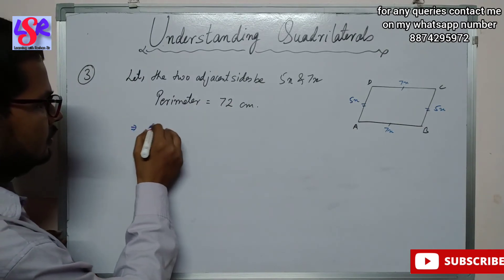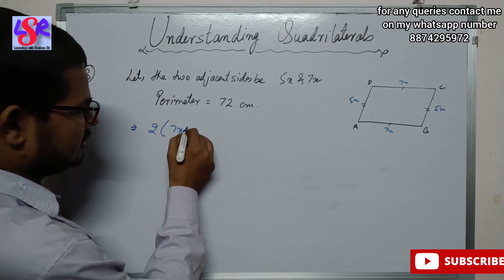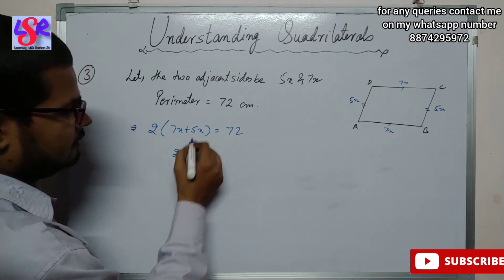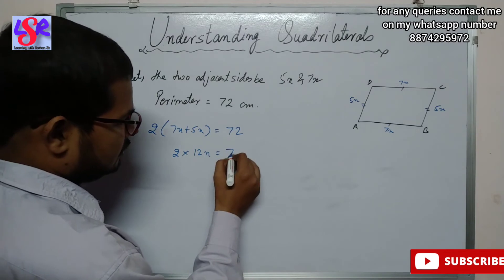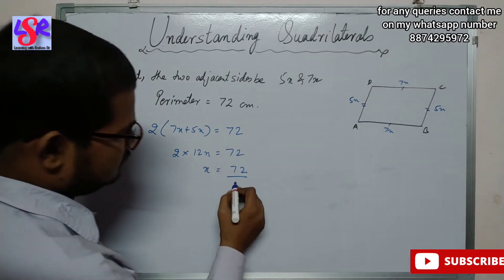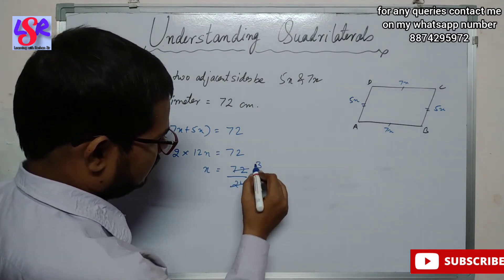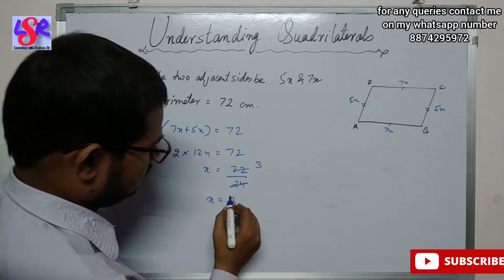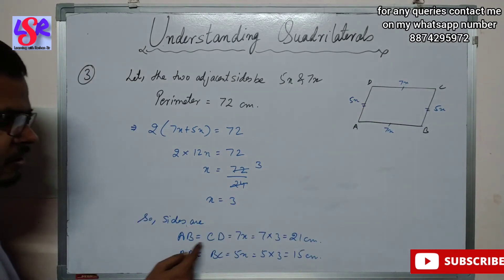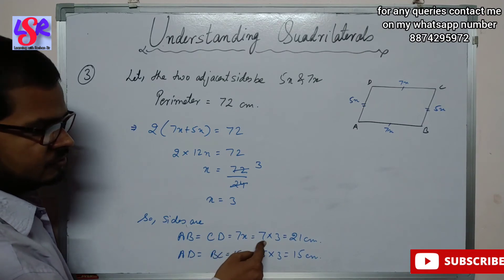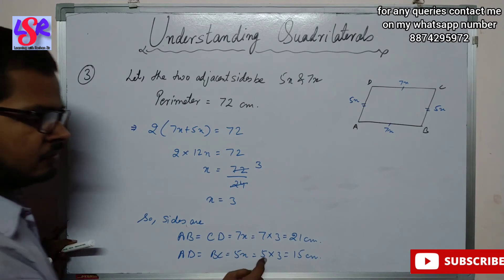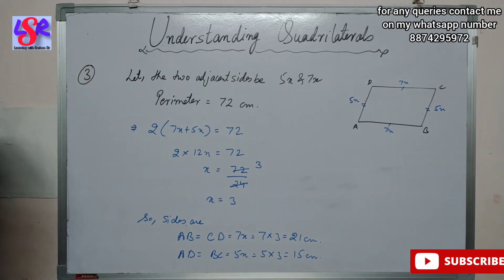The perimeter gives: 2(7x + 5x) equals 72, so 2 × 12x equals 72, giving x equals 3. Therefore AB equals CD equals 7x equals 21 centimeters, and AD equals BC equals 5x equals 15 centimeters.